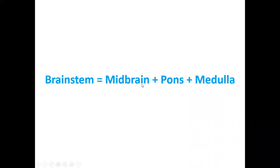The brainstem comprises of the midbrain, pons, and medulla. These three structures together are called the brainstem. The midbrain is the superior part, the pons is the middle, and the medulla is the lower part, which continues with the spinal cord.